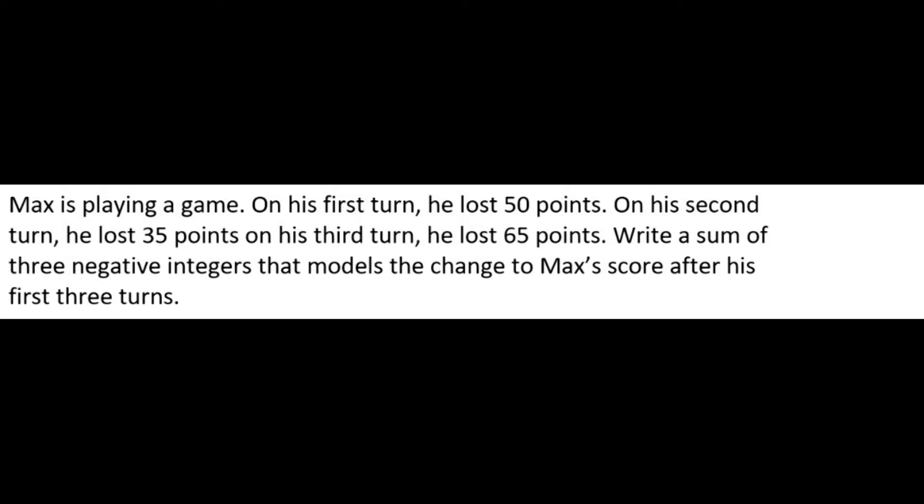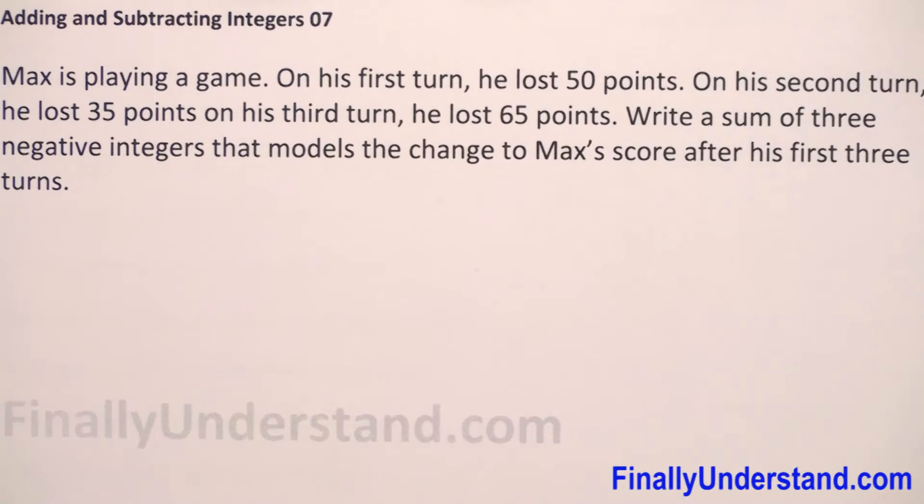Max is playing a game. On his first turn he lost 50 points. On his second turn he lost 35 points. On his third turn he lost 65 points. We have to write a sum of three negative integers that models the change to Max's score after his first three turns.